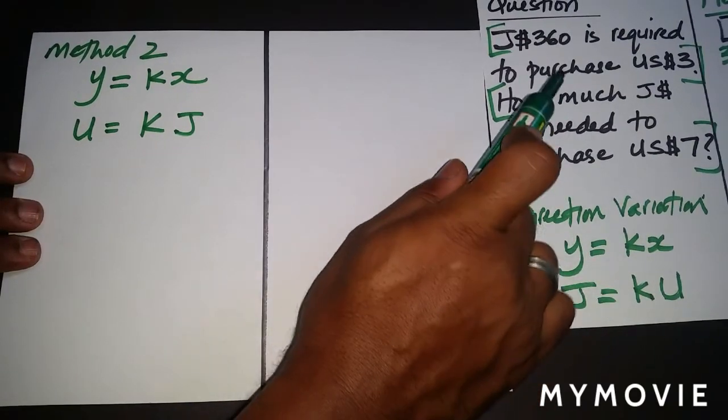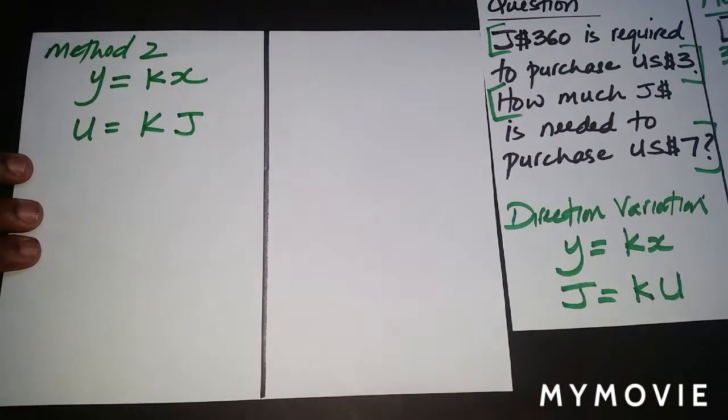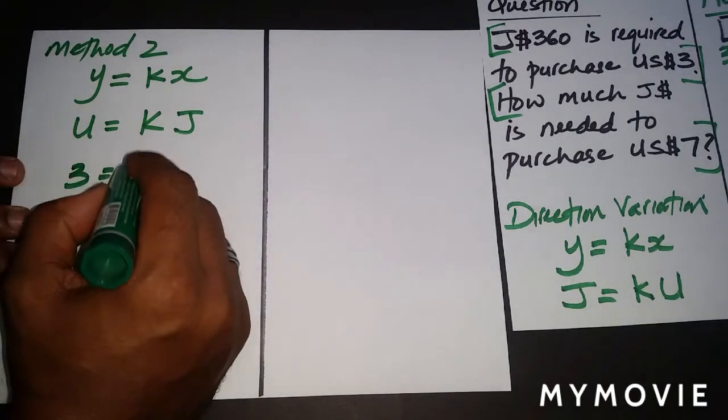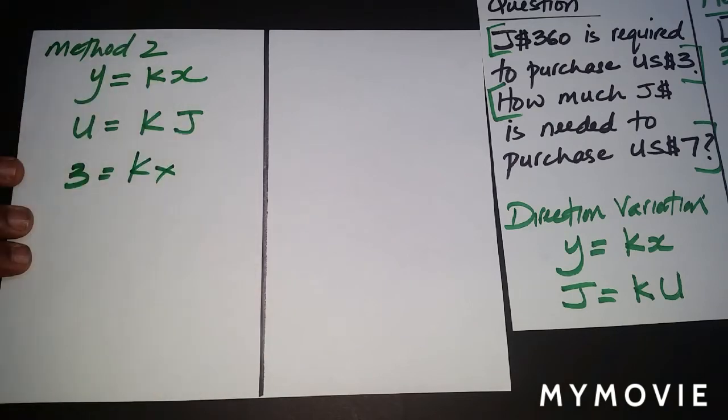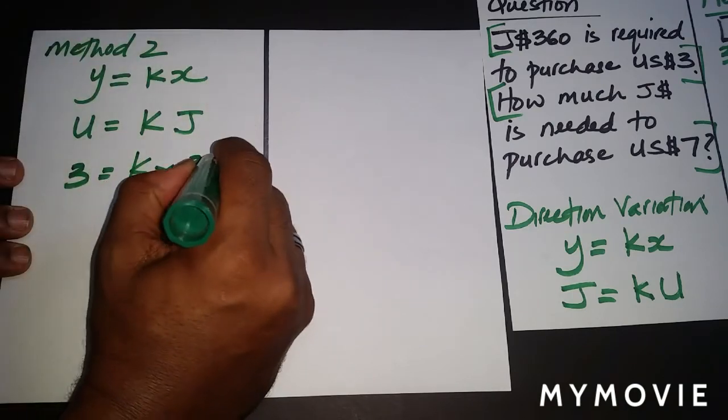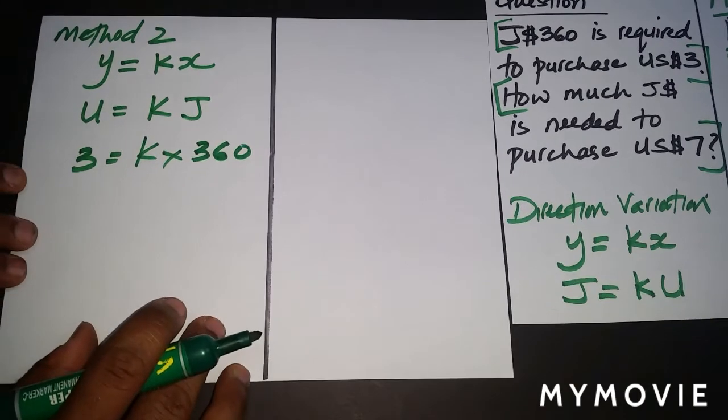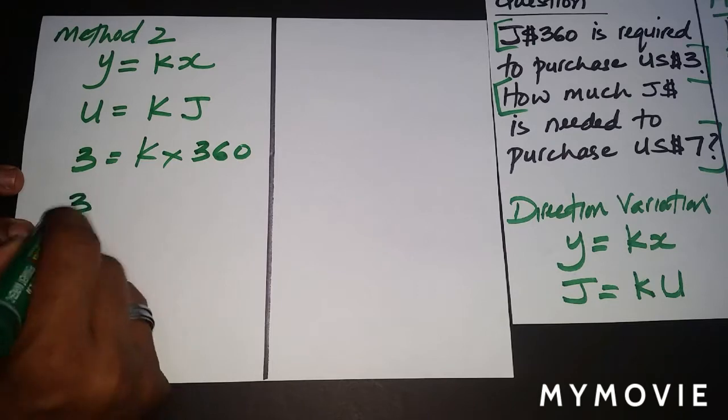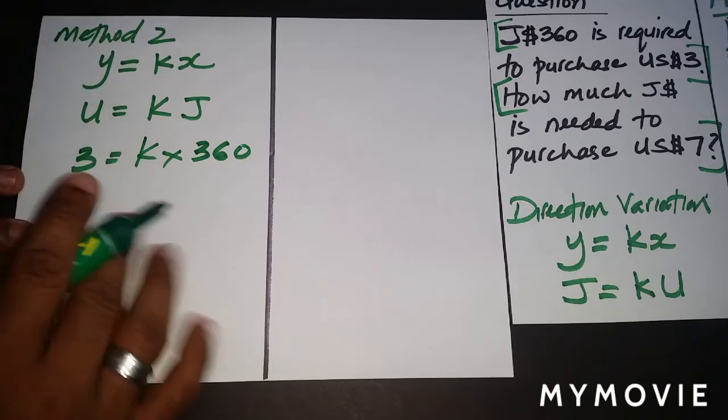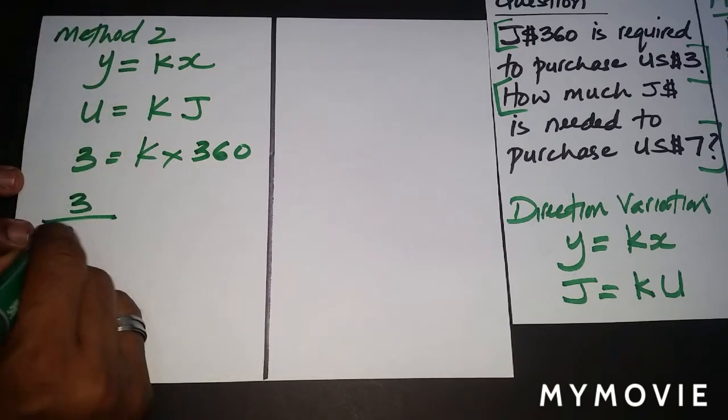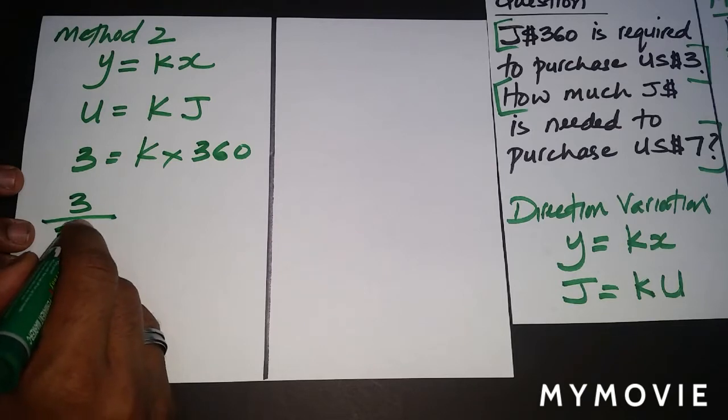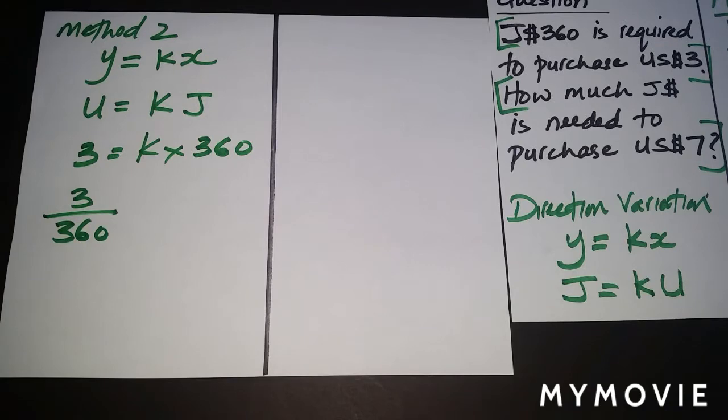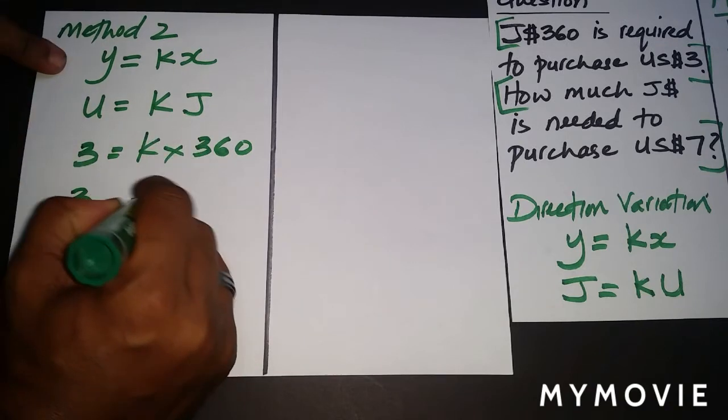Remember what the question said: 360 Jamaican is required to purchase US $3. So $3 US is purchased by 360 Jamaica. Remember this is U.S. and it's Jamaican here. To find the value of K in this method, we're dividing 3 by 360. When we divide 3 by 360, we know that's going to be the value of K.